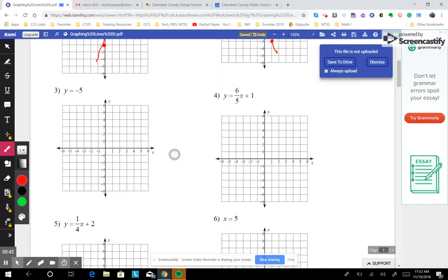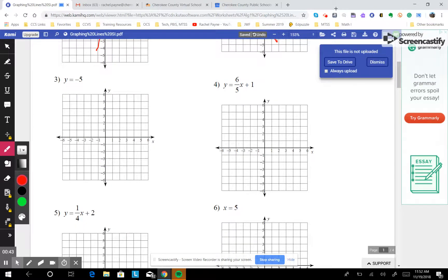Scroll down and do another one now. Now this one, if you want to put it in mx plus b form, you can. Y equals 0x, because they didn't have an x there, and then minus 5.